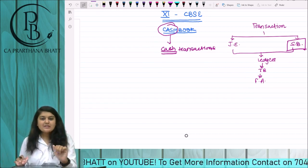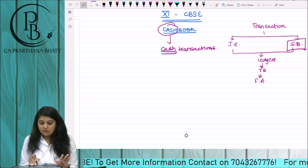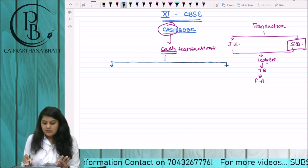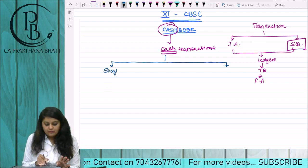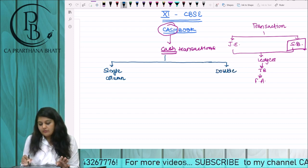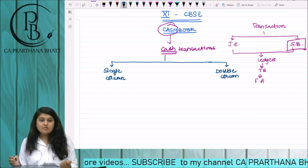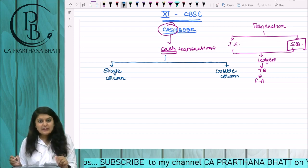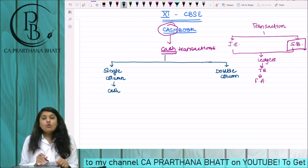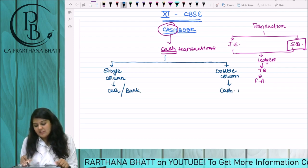Cash book is basically of two types. Some may prepare it of three types, but basically it is of two types. One is a single column cash book, and another one is a double column cash book. Some may prepare it as a multi-column, that is three-column cash book also.